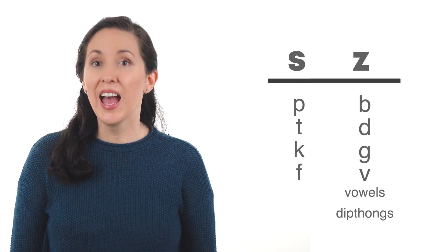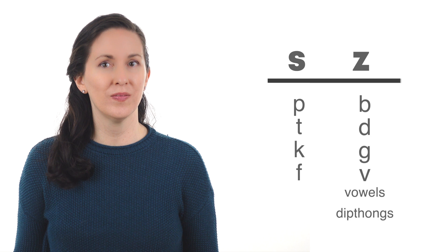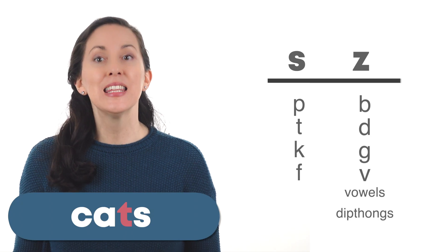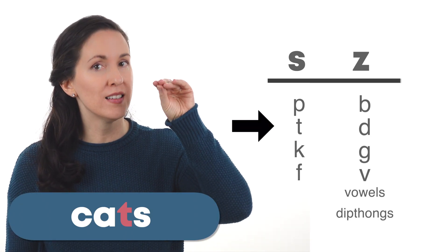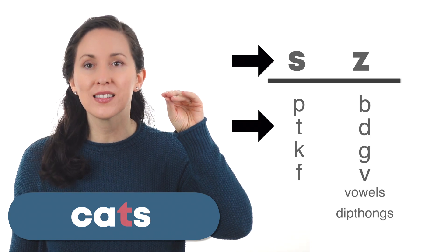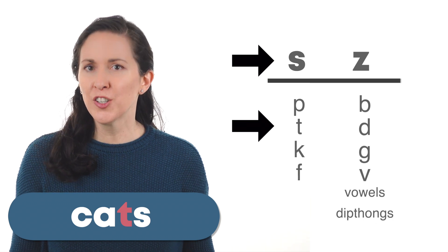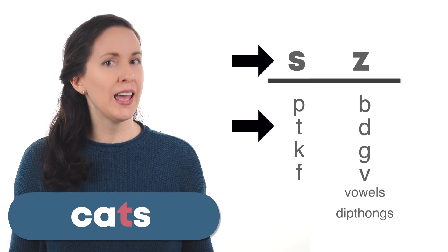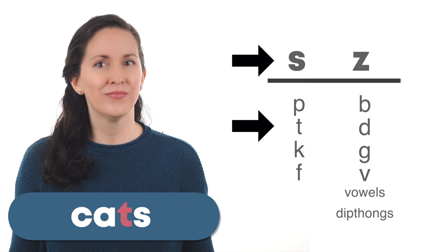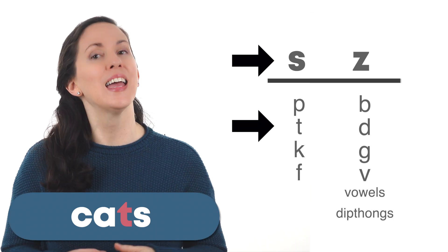Let's look at our examples again. Cats and dogs. With cats, the T is voiceless, so the S is also voiceless. Cats. It would be unnatural and difficult to say cats. It flows much better and easier to say cats.